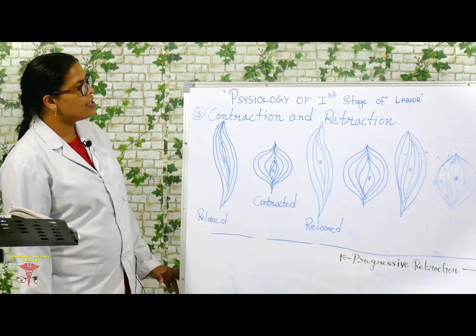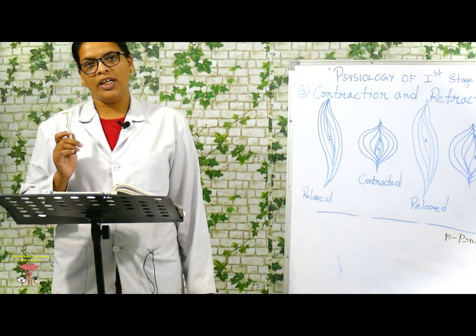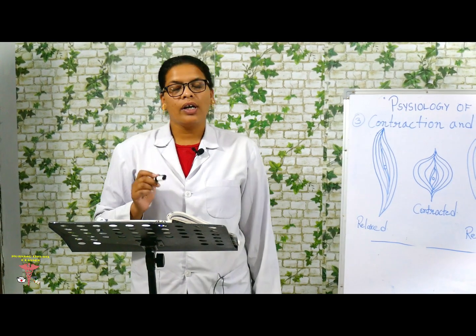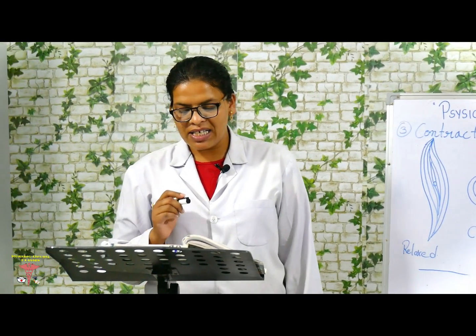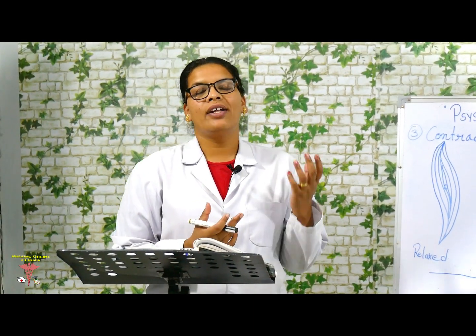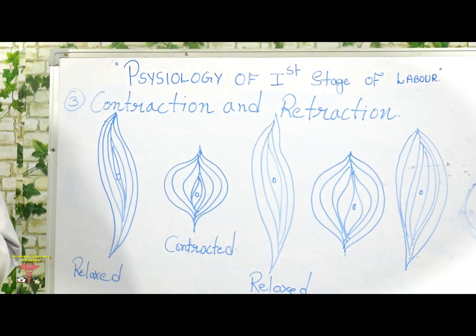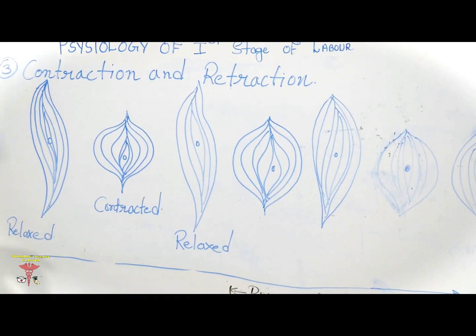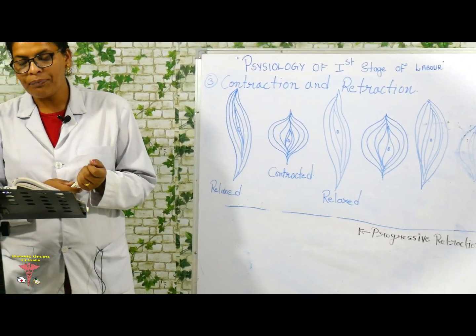The third physiological change in the first stage of labor is contractions and retractions — both are involuntary actions of the uterine muscles. Retractions is a phenomenon of the uterus in labor in which the muscle fibers are permanently shortened. The uterine muscles have a unique property where both contractions and retractions are continuously happening. In retractions, the uterine muscles are permanently shortened and the size of the uterus is progressively reduced.